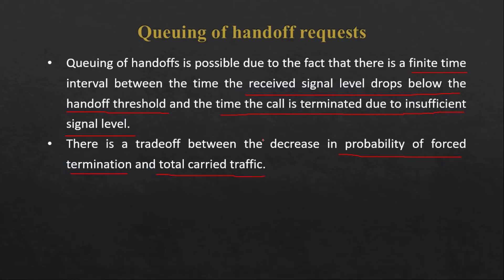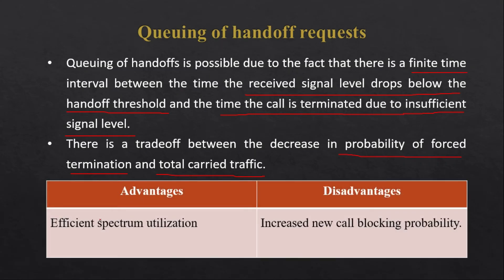Whenever a channel becomes available, we assign that channel to the queued user. In this queuing method, instead of utilizing a fixed portion for handoff, we utilize the full available channels for carry traffic as well as handoff. The advantage of this method is efficient spectrum utilization because we allocate all channels to carry traffic. However, a disadvantage is an increase in new call blocking probability when all channels are busy, since the total channels are used by both carry traffic and handoff requests.